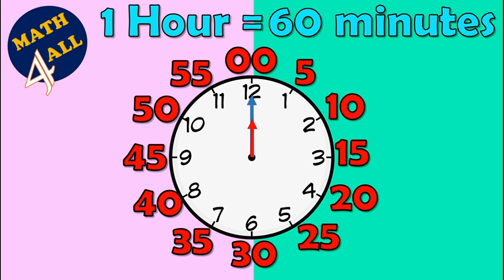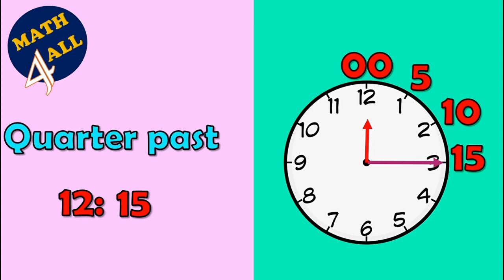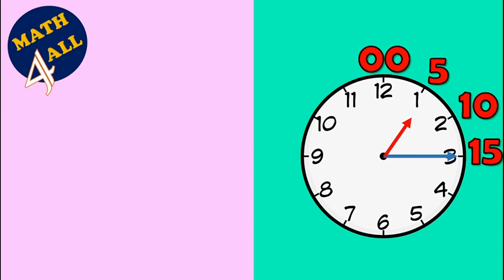Let's start here. The short hand is on twelve, so it's twelve. And the long hand is on three — the long hand is for minutes, and here it means fifteen minutes. It's twelve fifteen, or it's quarter past twelve.